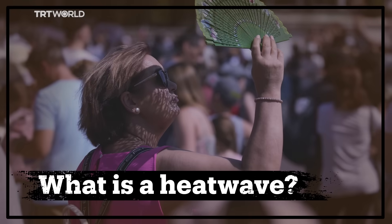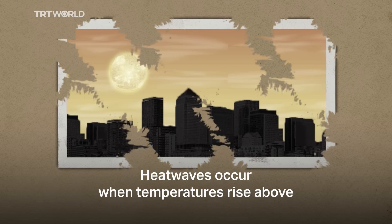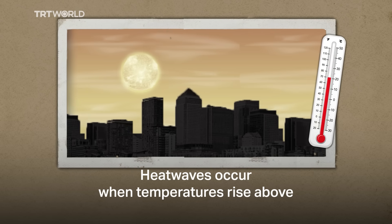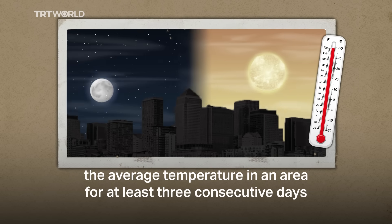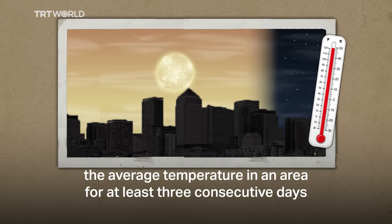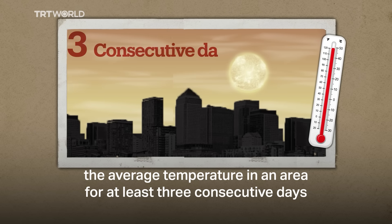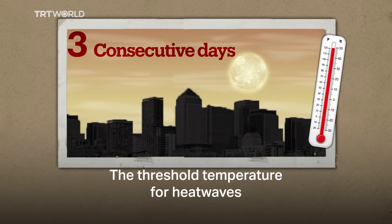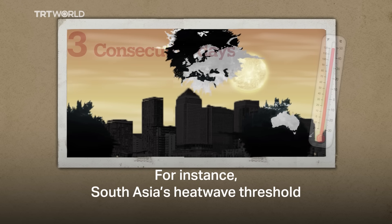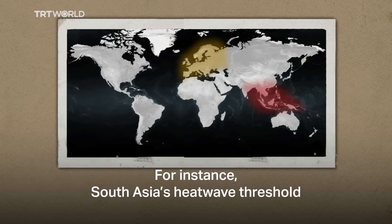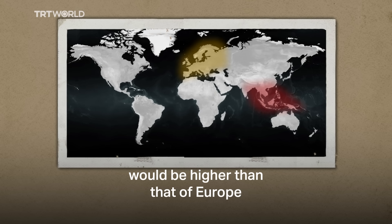What is a heatwave? Heatwaves occur when temperatures rise above the average temperature in an area for at least three consecutive days. The threshold temperature for heatwaves depends on the local average. For instance, South Asia's heatwave threshold would be higher than that of Europe.